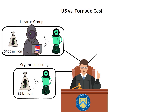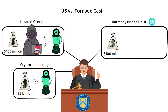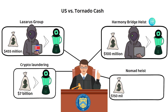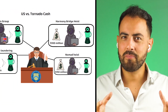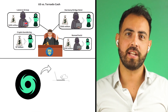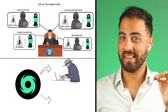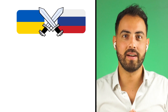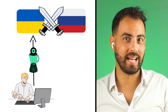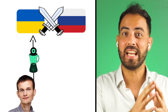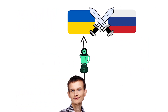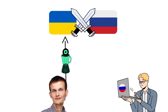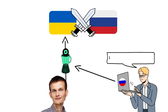On top of this, Tornado Cash was also used in the Harmony Bridge heist which saw almost $100 million get mixed through the app, and over $150 million in the Nomad heist. Now this does paint a picture of an illegal app being used only for illegal activities. However, I want to argue that this is not always the case and there are legitimate use cases. For example, Russian critics of the Ukrainian war have been using Tornado Cash to secretly donate funds to Ukraine, which includes Ethereum founder Vitalik Buterin, who donated through Tornado Cash the day after it was sanctioned by the US government. When you are a citizen of a country at war with another country and you want to donate to the opposite side, you really do not want a clear link showing you as the donating party — hence why a service like Tornado Cash is essential.